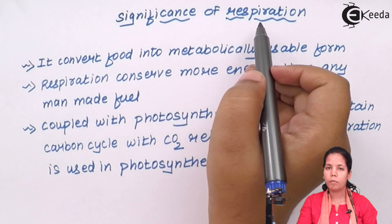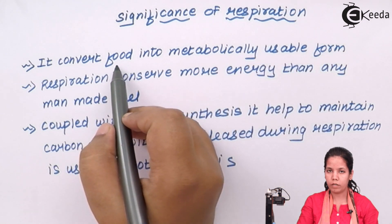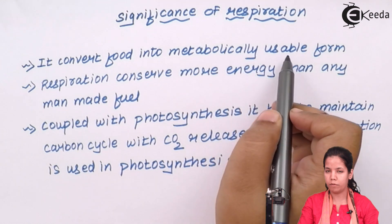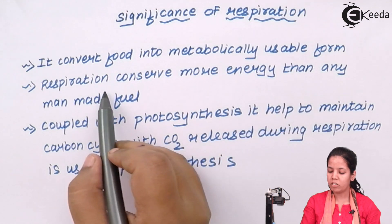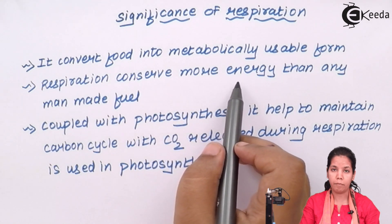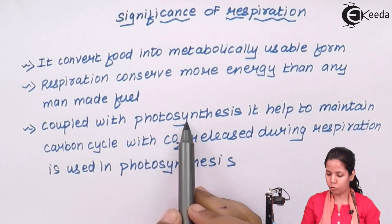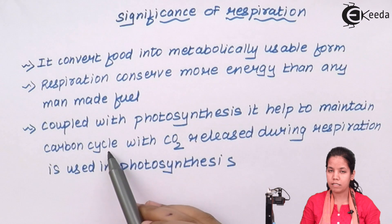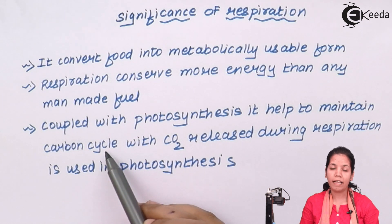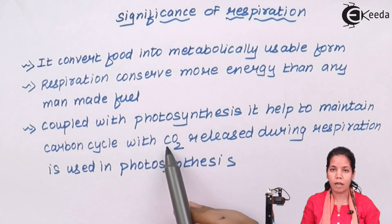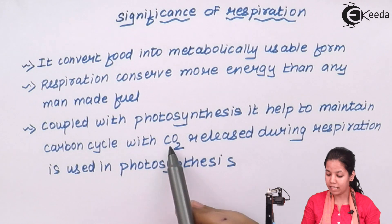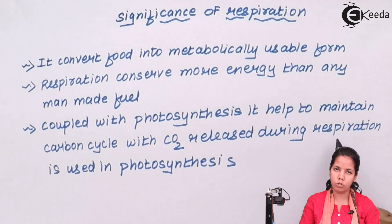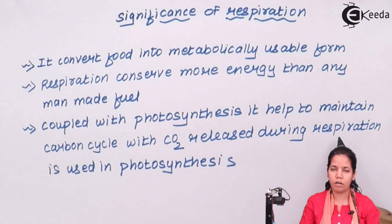The significance of respiration: it converts food materials — carbohydrates, proteins, and fats — into metabolically usable forms by the process of catabolism and anabolism. Respiration can conserve much more energy than any other man-made fuel, especially glycolysis. When photosynthesis is coupled with respiration, the carbon cycle is maintained — plants use CO2 for photosynthesis, and respiration gives CO2 back to nature as a by-product.